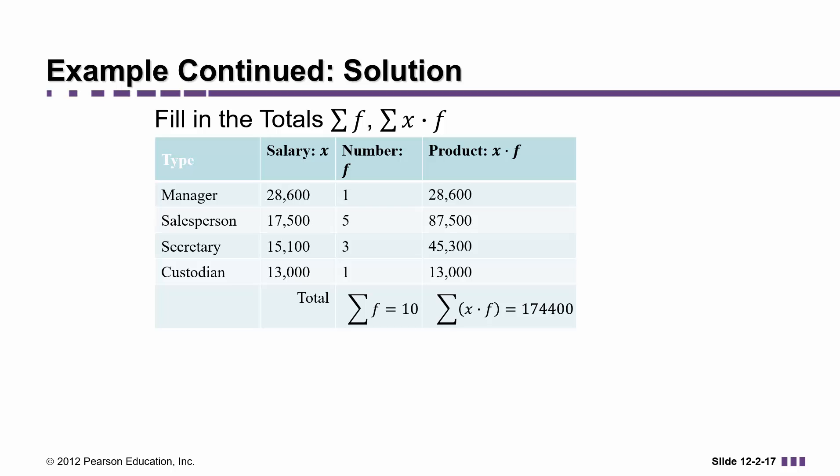The sum of the frequencies is 10, and the sum of all the money spent on salaries is $174,400. So if we divide that total by 10, the number of salaries, we get the average salary. You always want to multiply all the data values times their frequencies, add those values up, and divide by the total number of frequencies. In this case, the average salary turns out to be $17,440.